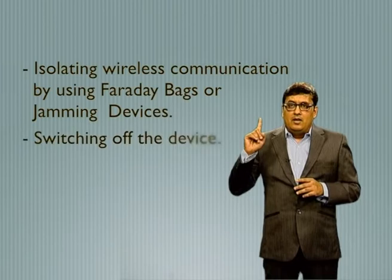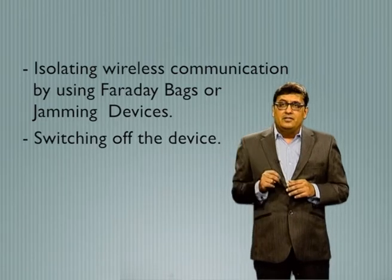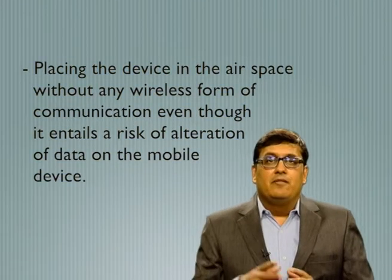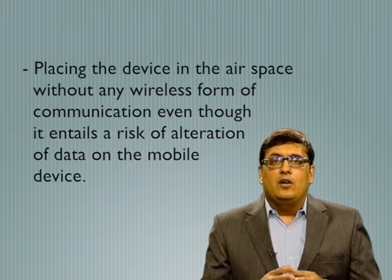This must be achieved since it cannot be allowed to delete data or potential evidence in the investigation. Furthermore, it should be considered that there are devices that can use wireless connection from a safe distance to destroy the mobile phone subject to investigation. The isolation process must be performed in order to present data from the mobile device as valid and with unquestionable integrity. Isolation of a mobile device can be performed in three basic ways: isolating wireless communication by using Faraday bags or jamming devices; switching off the device; or placing the device in an airspace without any wireless form of communication, even though this entails a risk of alteration of data on the mobile device.